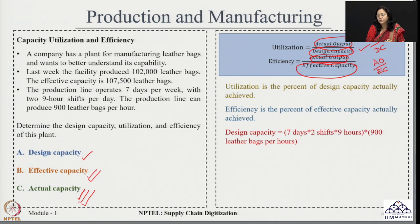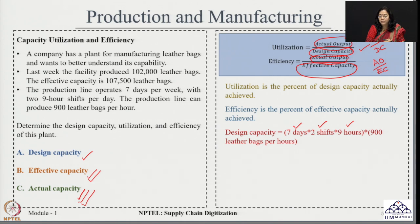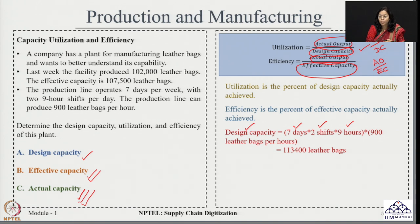Let us see how design capacity is calculated. Since the facility works for seven days, two shifts, and nine hours every day, the total available time is 7 days × 2 shifts × 9 hours. Every hour it produces 900 leather bags. When we multiply this together, we get our design capacity, which comes to around 1,13,400 leather bags.